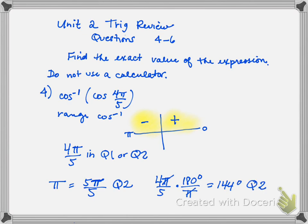Whichever way you want to go, as long as you know where you're at before you answer this question, it's important. Since I know I'm in quadrant 2, and quadrant 2 is one of the quadrants in the range of inverse cosine, the answer to this is going to be 4π/5. That is answer letter B.